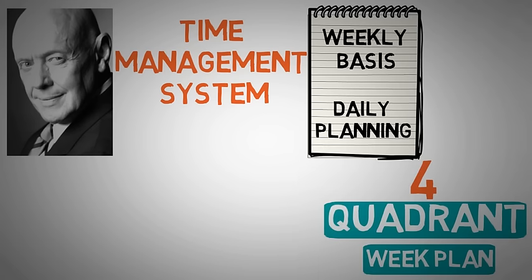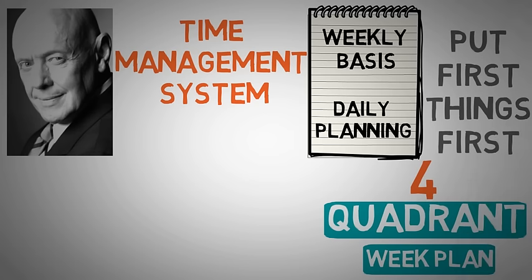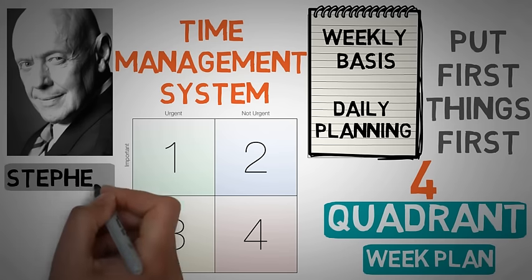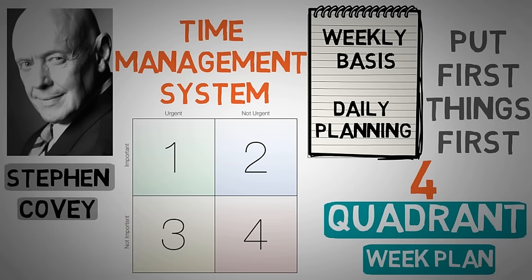If you remember, the third habit of highly effective people says put first things first, and this week plan based on four quadrants is the time management system that Stephen Covey recommends to help you do that.